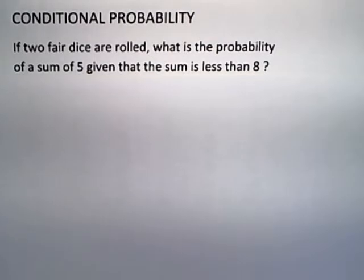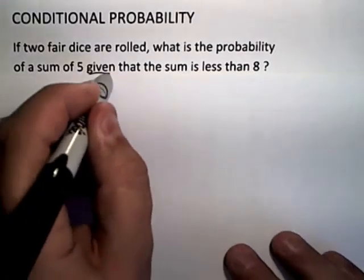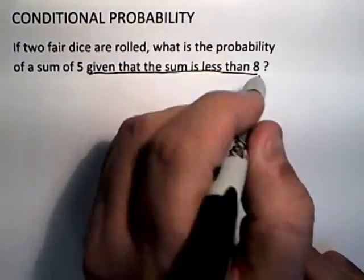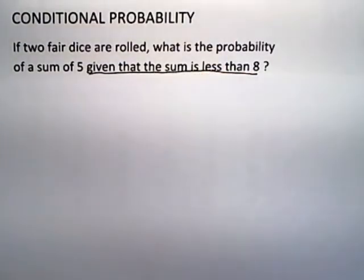If two fair dice are rolled, what is the probability of a sum of 5 given that the sum is less than 8? This is a conditional probability problem - given that, that's the condition, the sum is less than 8.